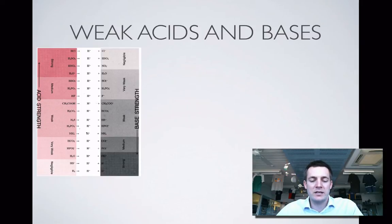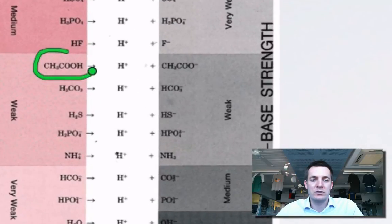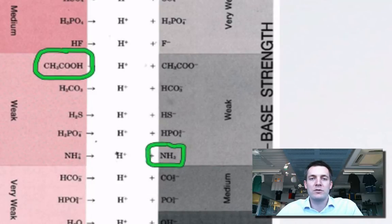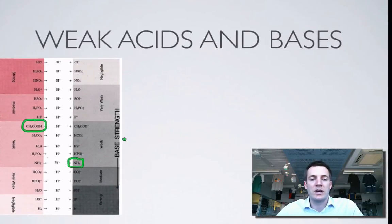We're looking now at weak acids and bases. And we are looking at this from a year 11 perspective - these are the only two that we need to know. We need to know this weak acid, ethanoic acid, and this weak base, ammonia. If you're in year 12, you might cover a few more of these when you do the organic topic, but for now, you're okay.